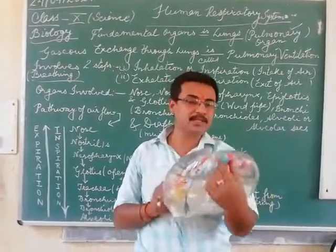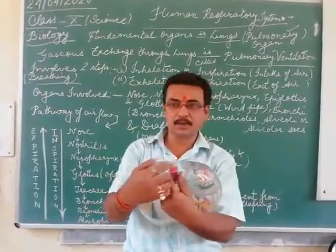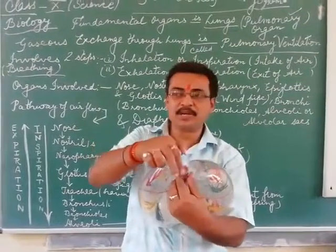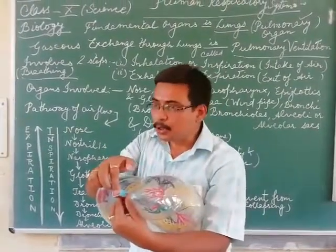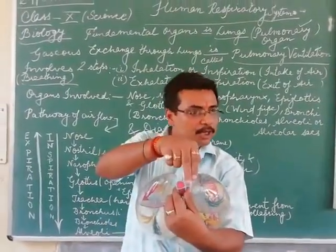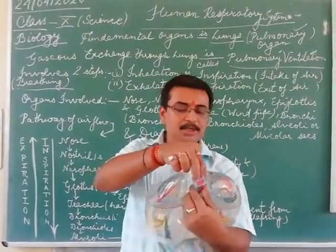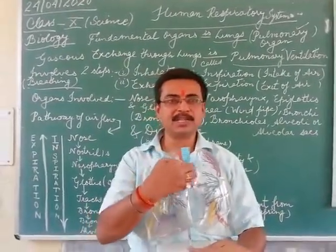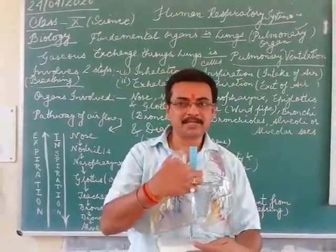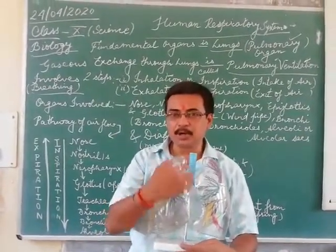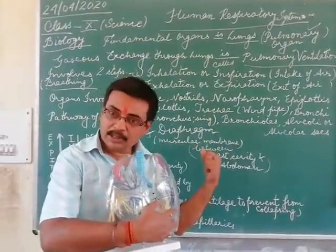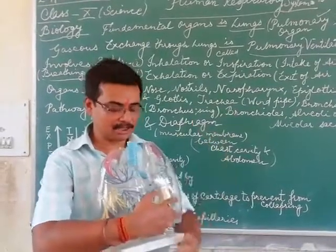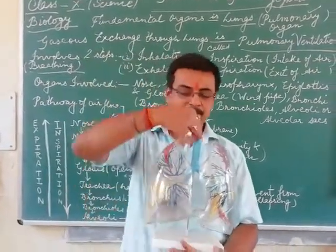Once again, air goes through the trachea. Over the trachea is the glottis, and over that is the epiglottis. It goes down into the trachea. You can see the bluish lines on the trachea — these are the rings of cartilage. Cartilage rings prevent the trachea from collapsing.